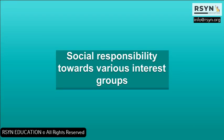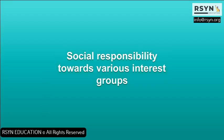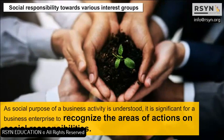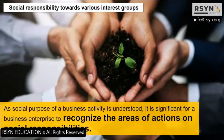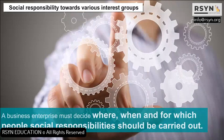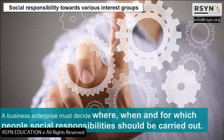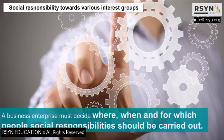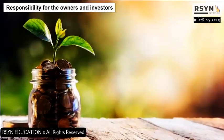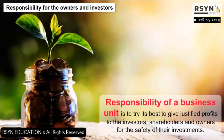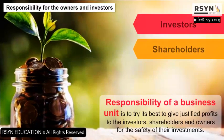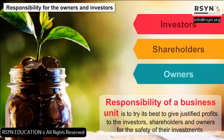Social responsibility towards various interest groups: As the social purpose of a business activity is understood, it is significant for a business enterprise to recognize the areas of actions on social responsibilities. A business enterprise must decide where, when and for which people social responsibilities should be carried out. Responsibility for the owners and investors: The responsibility of a business unit is to try its best to give justified profits to the investors, shareholders and owners for the safety of their investments.